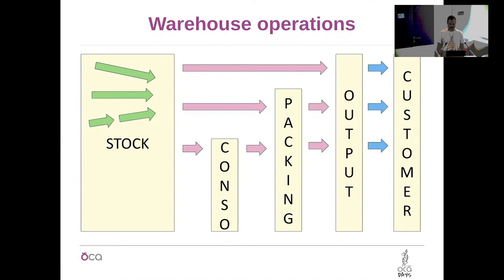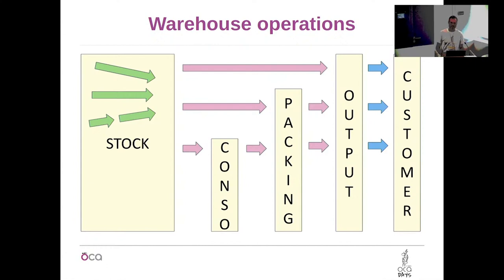I've divided this into three concepts which we've put in the OCA. The one on the right is about releasing operations in the warehouse. The one in the middle is about your flow in the warehouse from the stock to the carrier — the company shipping the goods. The first one on the left is about how to collect the goods in the warehouse.